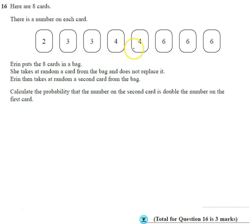So we've got different numbers on cards in a bag, and she's going to take one at random, keep it out of the bag, doesn't put it back in, does not replace it, and then she's going to take the second one. And we're asked to calculate the probability that the number on the second card is double the number on the first card.